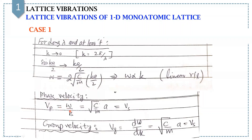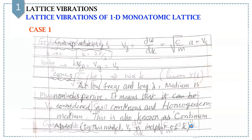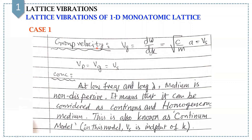What is phase velocity? That is omega over K equals sqrt(C/M)·A, which further equals Vs, the sound velocity. And what is group velocity? Group velocity equals dω/dK equals sqrt(C/M)·A, which also equals Vs. So we get V_phase equals V_group equals sound velocity. At low frequency or long wavelength, the medium is non-dispersive — it can be considered as a continuous and homogeneous medium, also known as the continuum model, in which velocity is independent of K.